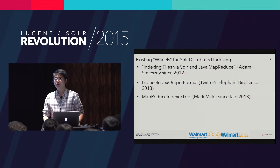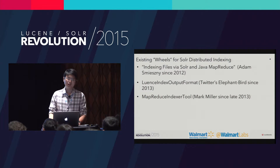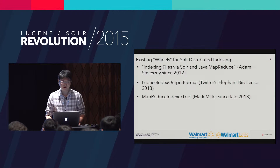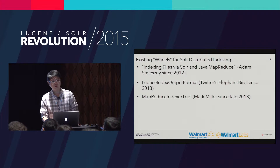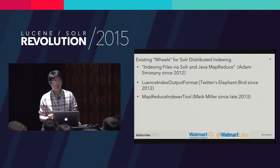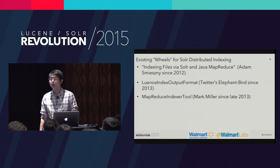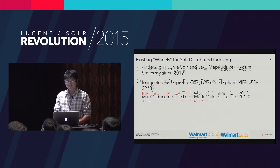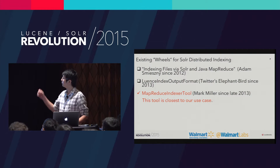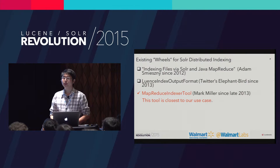In software engineering, the principle says don't reinvent the wheel. A quick Google search returned three existing wheels. The first one is IndexFiles with Solr and Java MapReduce. The other two are Lucene index output format and MapReduce indexer tool. After a bit of evaluation, we found that the MapReduce indexer tool by Mark Miller is closest to our use case.